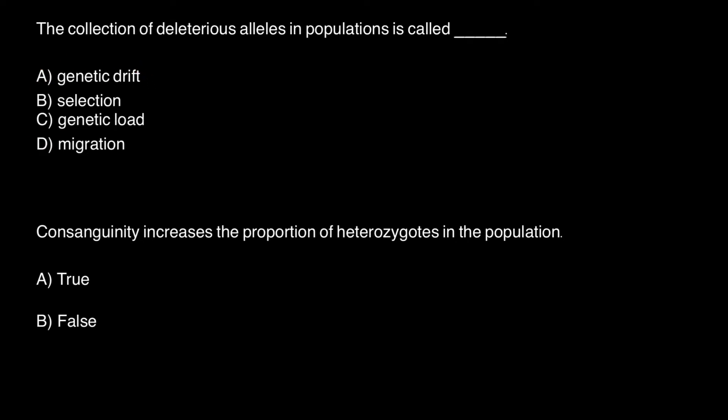Genetic drift, or changes in allelic frequencies in a population, can be caused by selection or migration. As you see, most of you, I suppose, chose the correct answer, which would be genetic load. This is what we call the collection of deleterious alleles in a population.